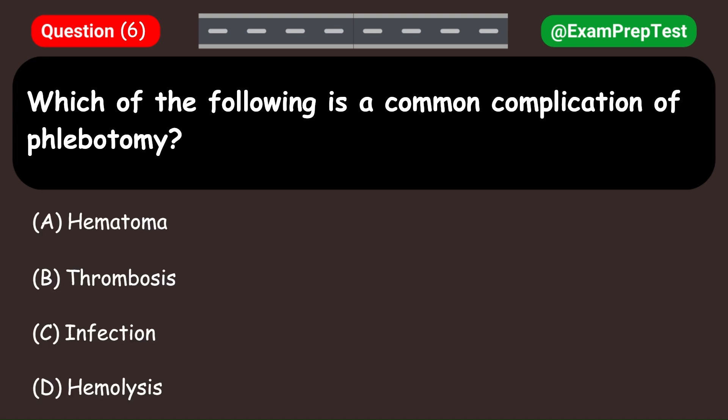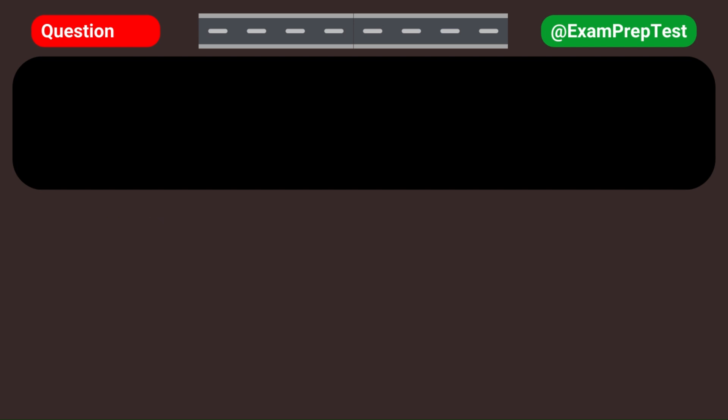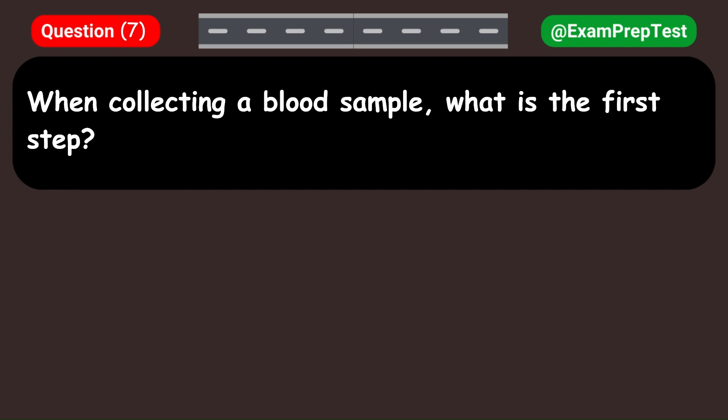Which of the following is a common complication of phlebotomy? A. Hematoma. B. Thrombosis. C. Infection. D. Hemolysis. Answer: A. Hematoma.